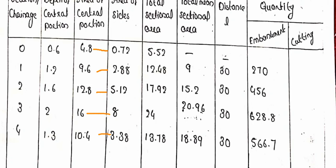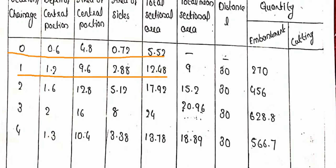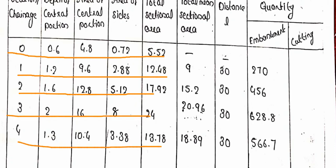Next, calculate the mean sectional area between consecutive stations by averaging adjacent total areas: (5.52 + 12.48) / 2 = 9.0; (12.48 + 17.92) / 2 = 15.2; (17.92 + 24.0) / 2 = 20.96; (24.0 + 13.78) / 2 = 18.89 square meters.